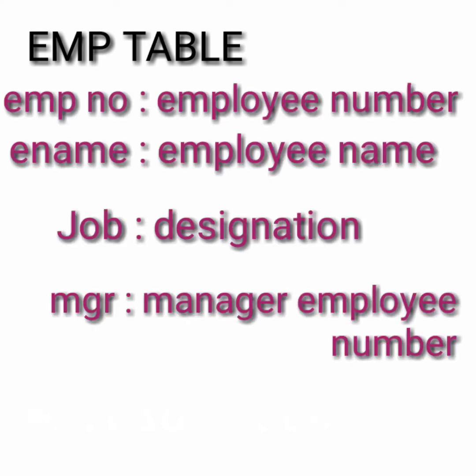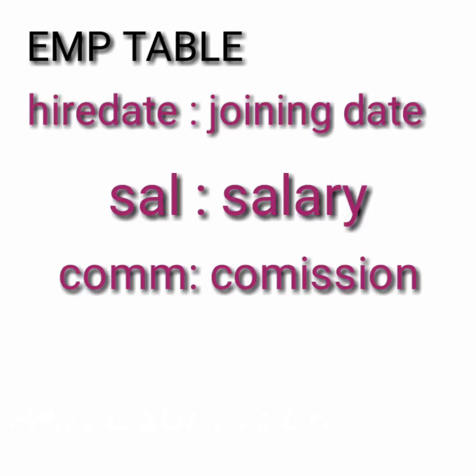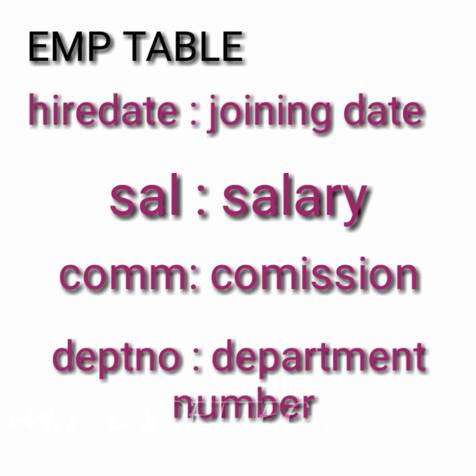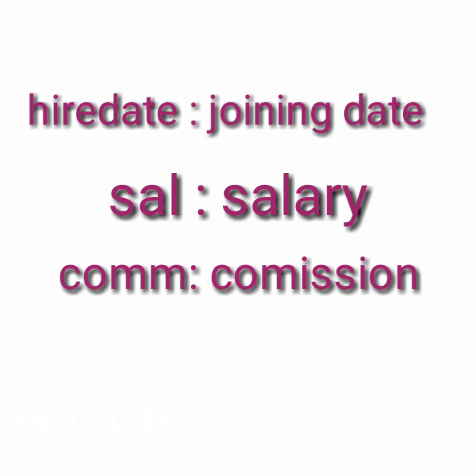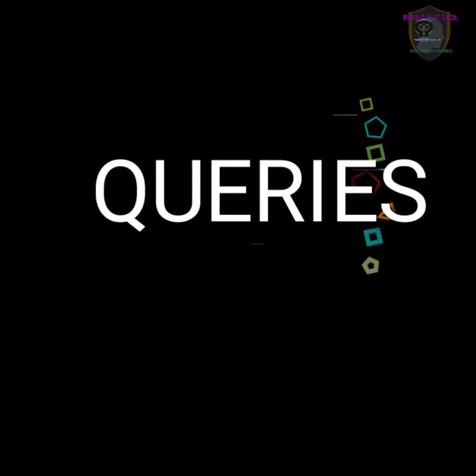To summarize: the emp table consists of the following columns — empno (employee number), ename (employee name), job (designation), mgr (manager employee number), hire date (joining date), sal (salary), comm (commission), and deptno (department number). The dept table consists of deptno (department number), dname (department name), and loc (location).